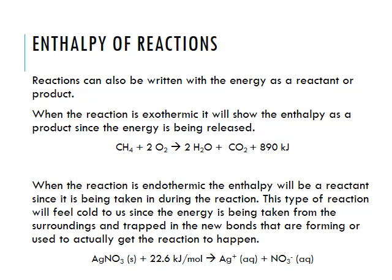Reactions can also be written with energy as a reactant or product. When the reaction is exothermic, it will show the enthalpy as a product since the energy is being released — we can think of it as just another thing formed as a product. So this reaction has methane plus oxygen forming water, carbon dioxide, and 890 kJ of energy being produced and given off.